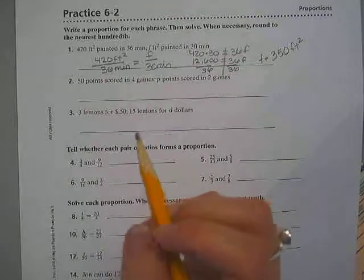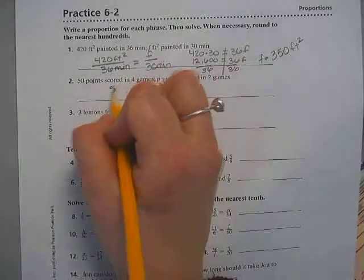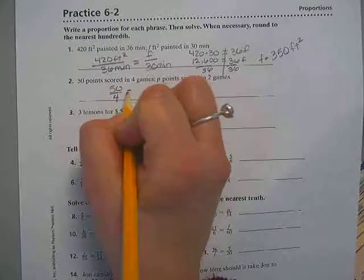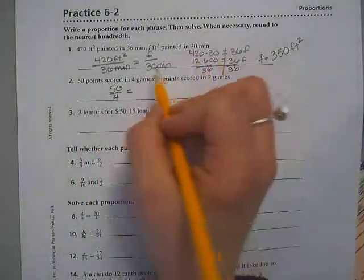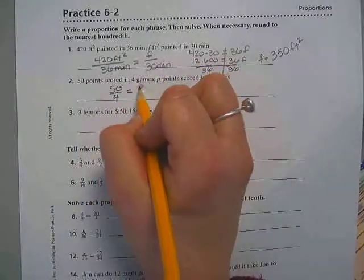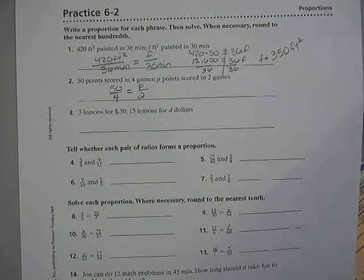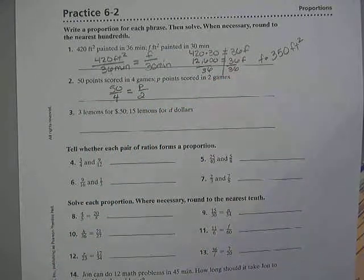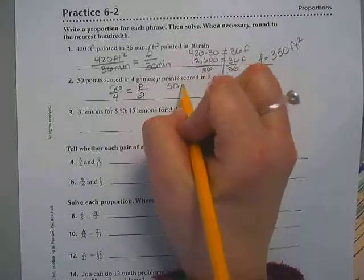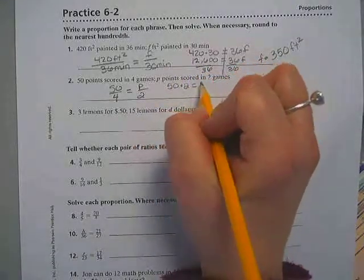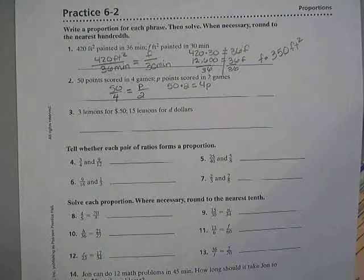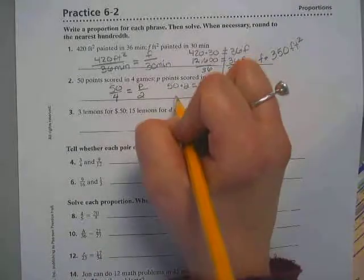All right, number two, basketball players. Fifty points scored in four games. Tells you how many points in two games. You might be able to do this in your head.